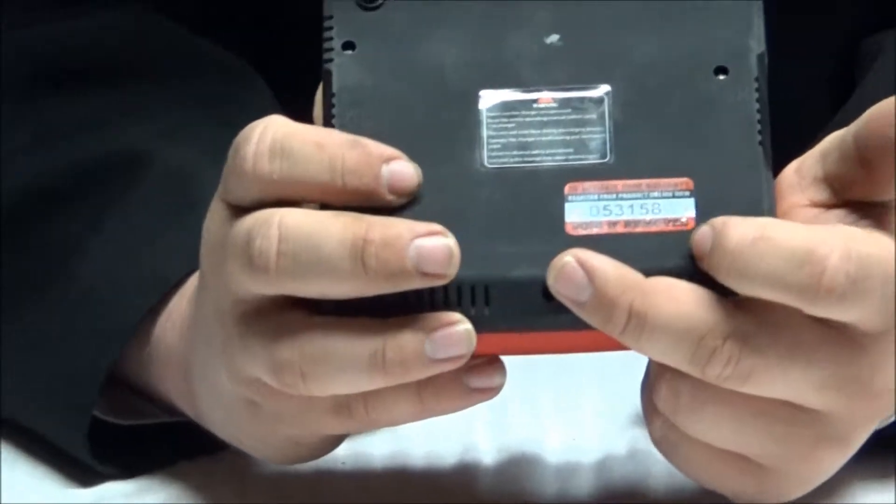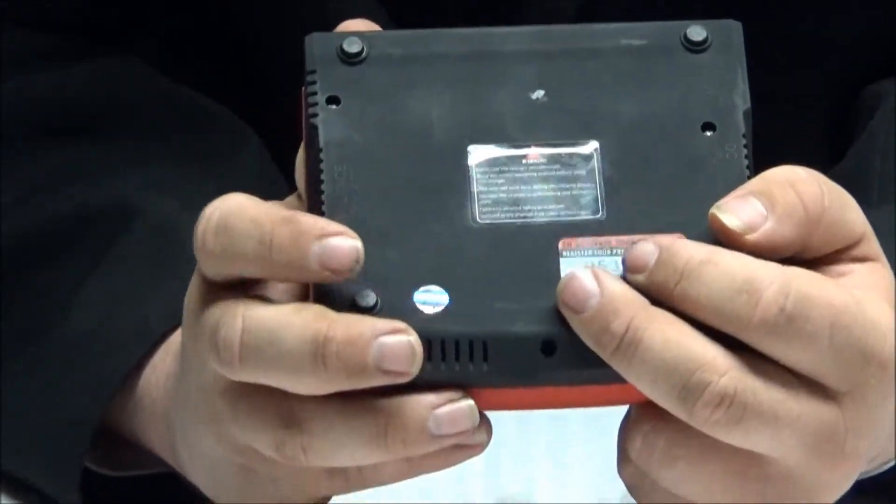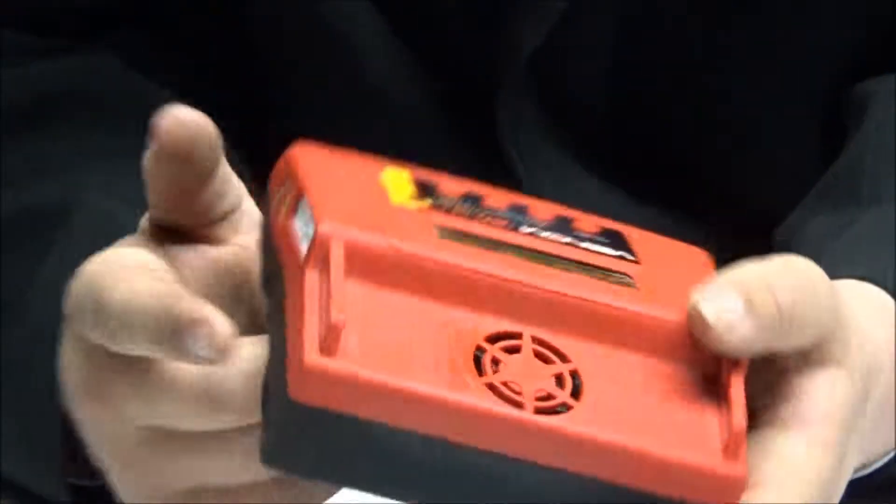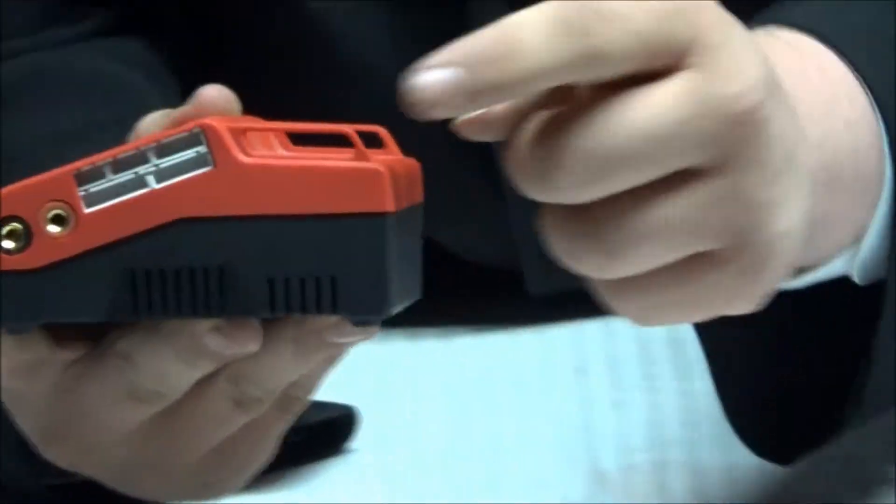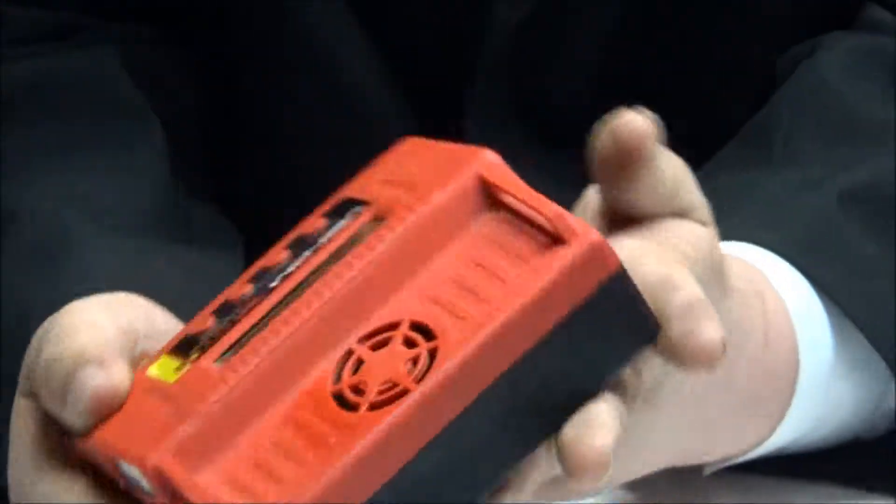And the bottom's got your warranty and the don't remove, void warranty sticker, etc. Cooling fan. And I guess this would be like a strap on the side, you can see here, or decoration, I'm not really sure.